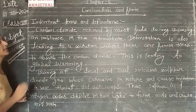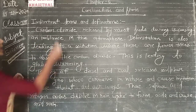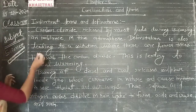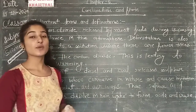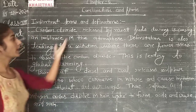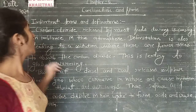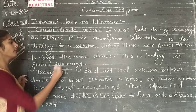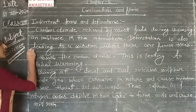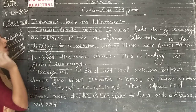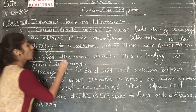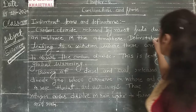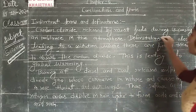Carbon dioxide released by most fuels during burning is causing an imbalance in the atmosphere. Deforestation is also leading to the situation where there are fewer trees to absorb the carbon dioxide. If carbon dioxide is increased, the main reasons are the atmosphere and deforestation.